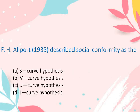Allport describes social conformity as: A. S curve hypothesis, B. V curve hypothesis, C. U curve hypothesis, or D. J curve hypothesis. The correct answer is D, J curve hypothesis.